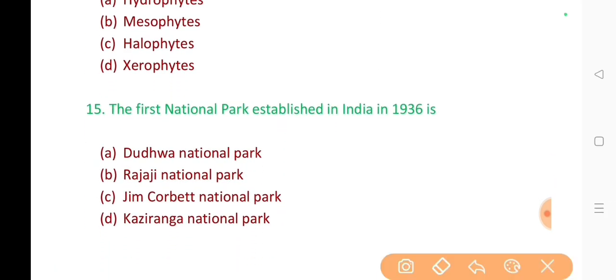15. The first national park established in India in 1936 is? The correct answer is option C. Jim Corbett National Park.